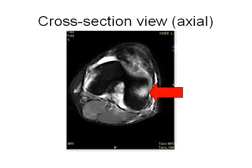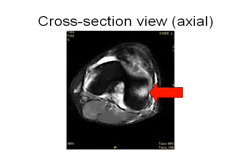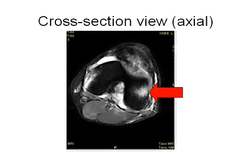The cross-section or axial view shows other clues to a torn ACL. The red arrow shows a white bone bruise in the dark femur or thigh bone. The bruise occurs when the ACL is torn. White fluid around the black femur shows the knee is swollen, which also occurs when the ACL is torn.